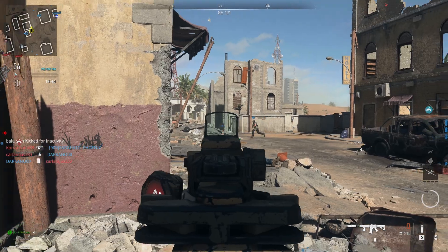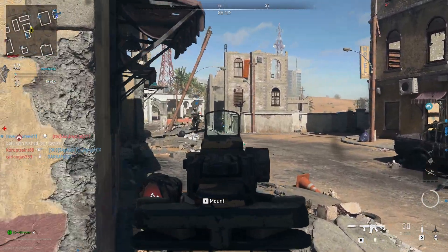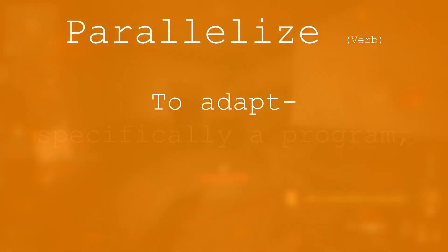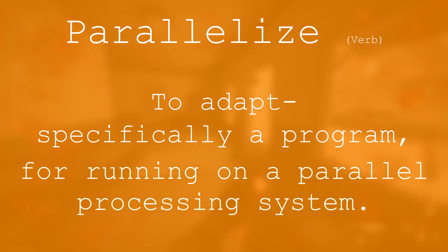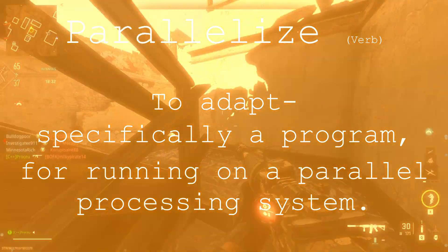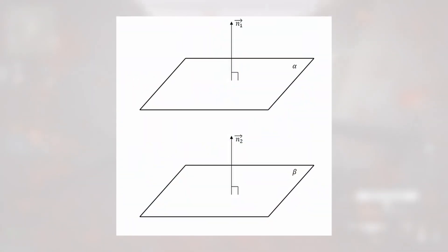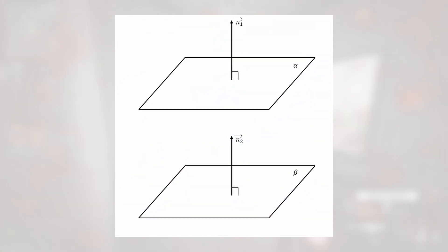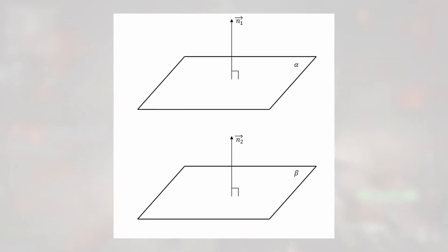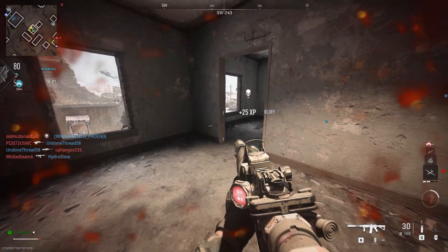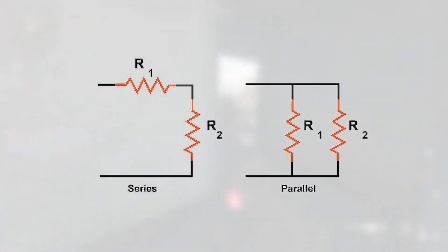Let's start with what the term parallelize means. The official definition — to adapt, specifically a program, for running on a parallel processing system — is something I personally dislike because it uses the term parallel when describing what parallel means. In a mathematical sense, you'd use the term parallel to describe an object or planar line that runs alongside another at a constant distance and never crosses. Similarly, in a computational sense, parallel means to occur at the same time — in other words, running side by side on different circuits.